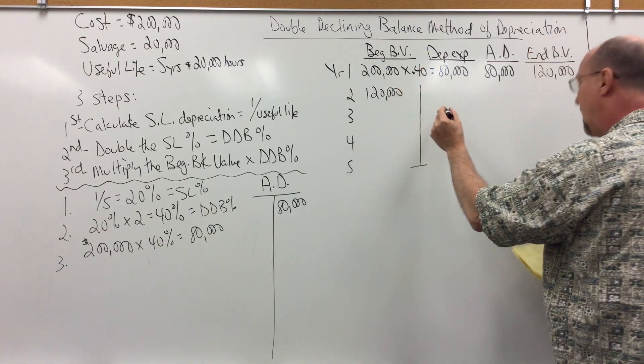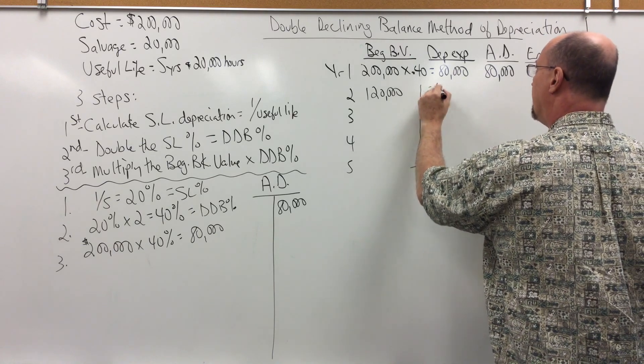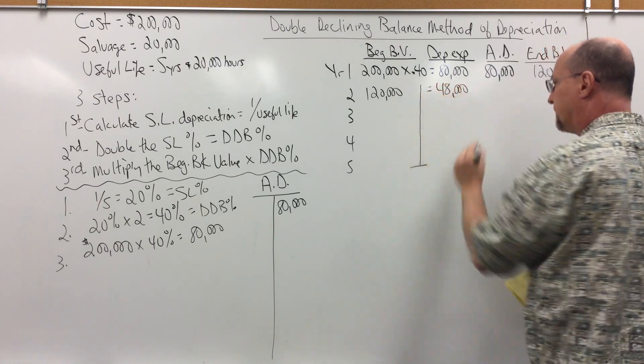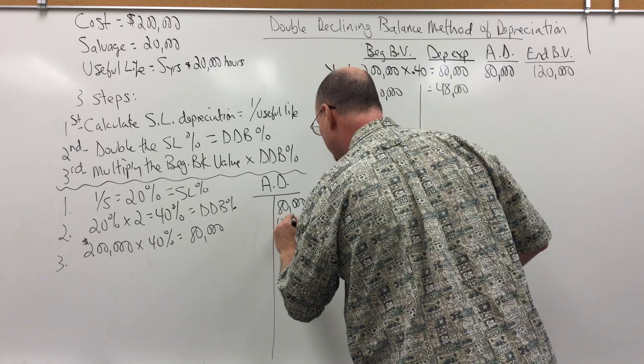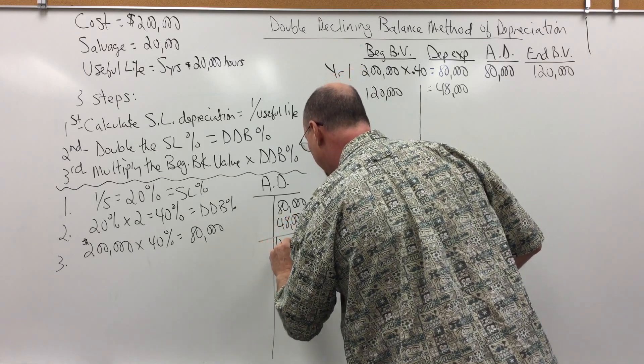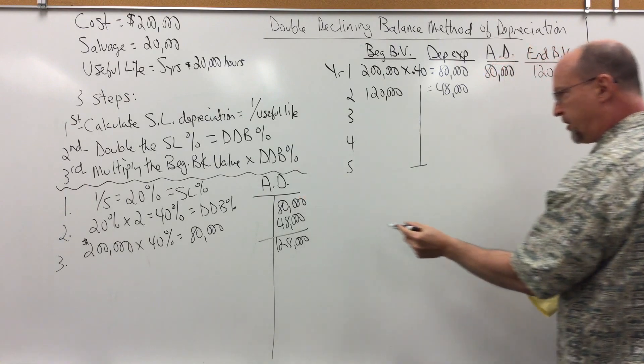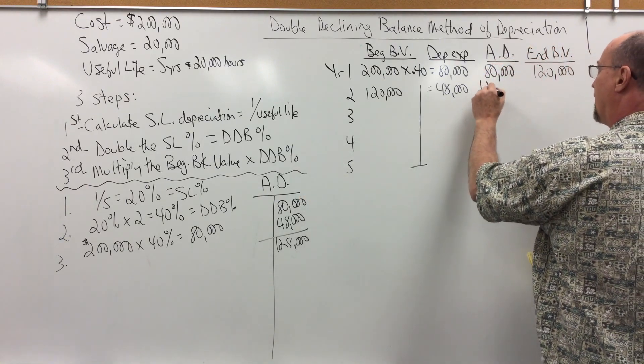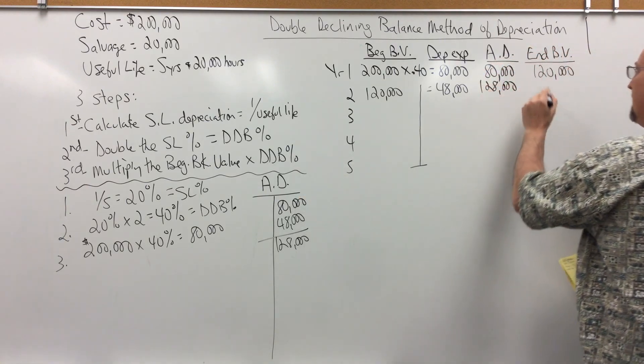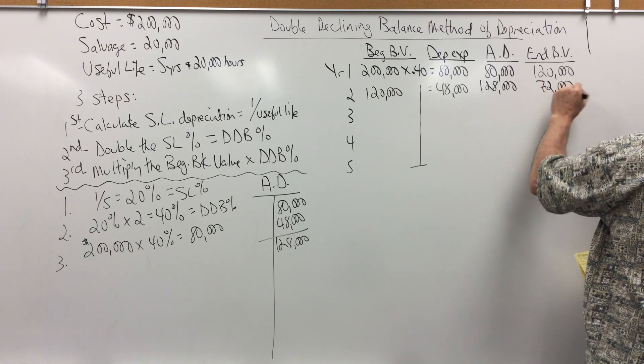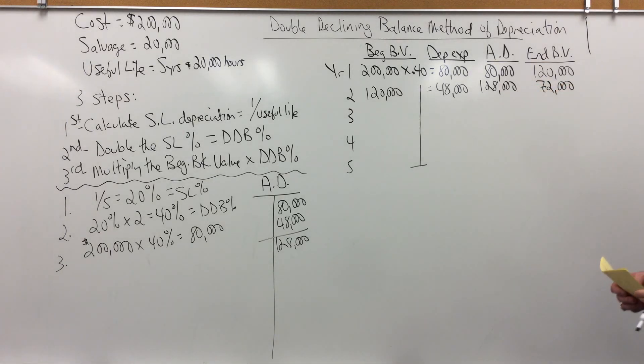120,000 times 0.4 is 48,000. 48,000 plus year 1's depreciation of 80, accumulated is 128,000 and ending book value is 72,000.